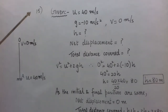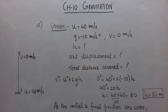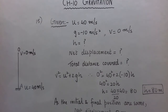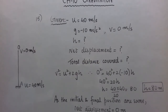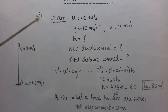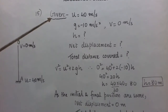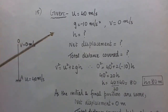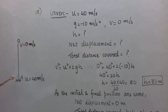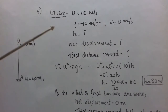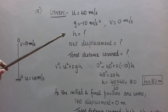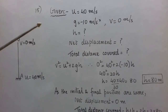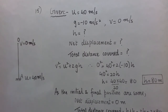Given: a stone is thrown vertically upward with initial velocity u equal to 40 meter per second. G is acceleration due to gravity; when thrown vertically upward, g should be taken as negative, minus 10 meter per second square. If you don't put the negative sign, the sum will go wrong. Find the maximum height h.